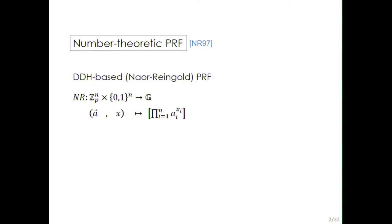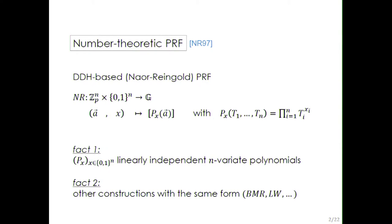Looking more carefully at the Naor-Reingold pseudorandom function, we can see that this is just the evaluation of multivariate polynomials which depend on the input X and the key A. Also, the family of polynomials associated with this construction is a family of linearly independent polynomials. Other constructions, such as the Boneh construction and the Lewko-Waters construction, have the same kind of structure.